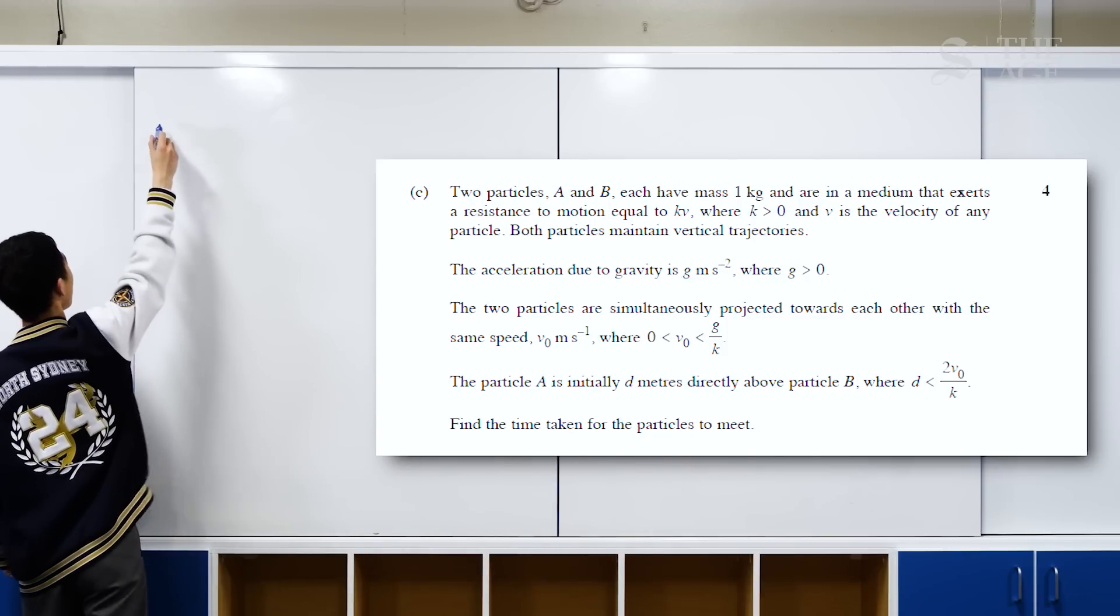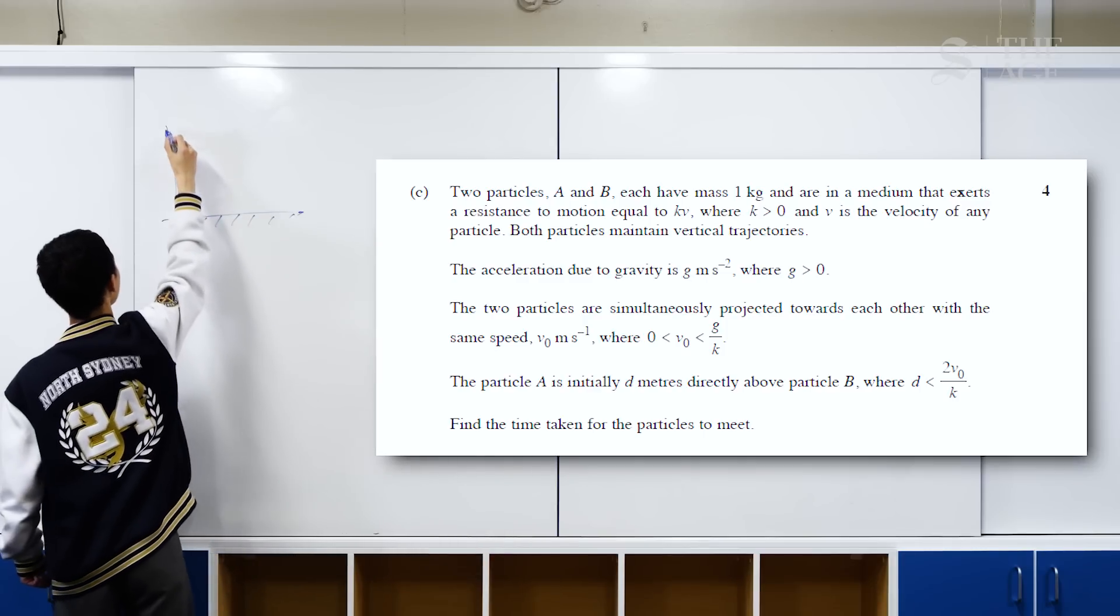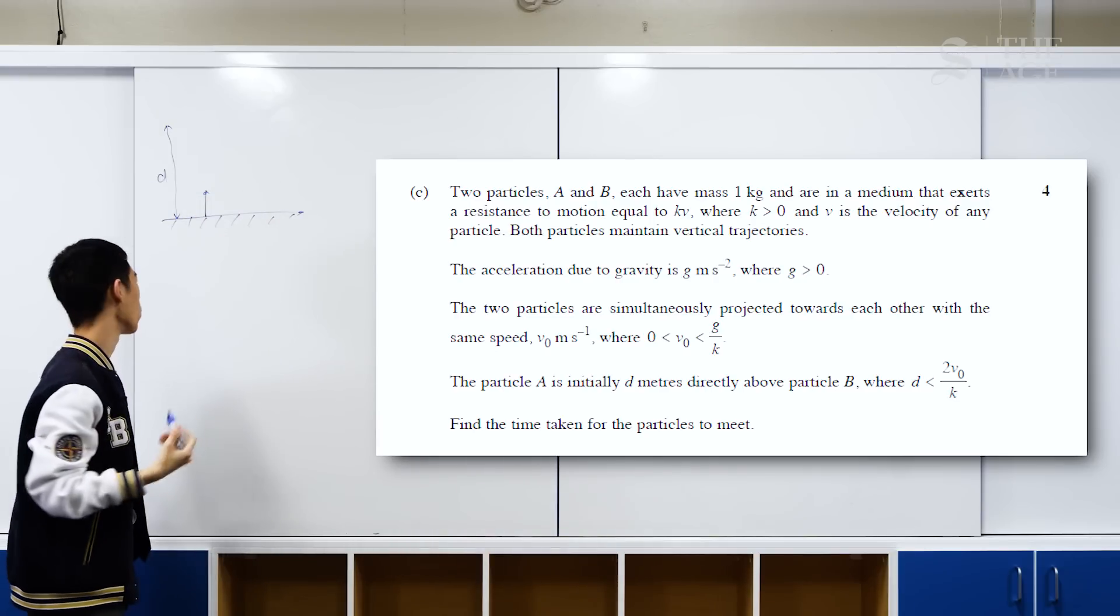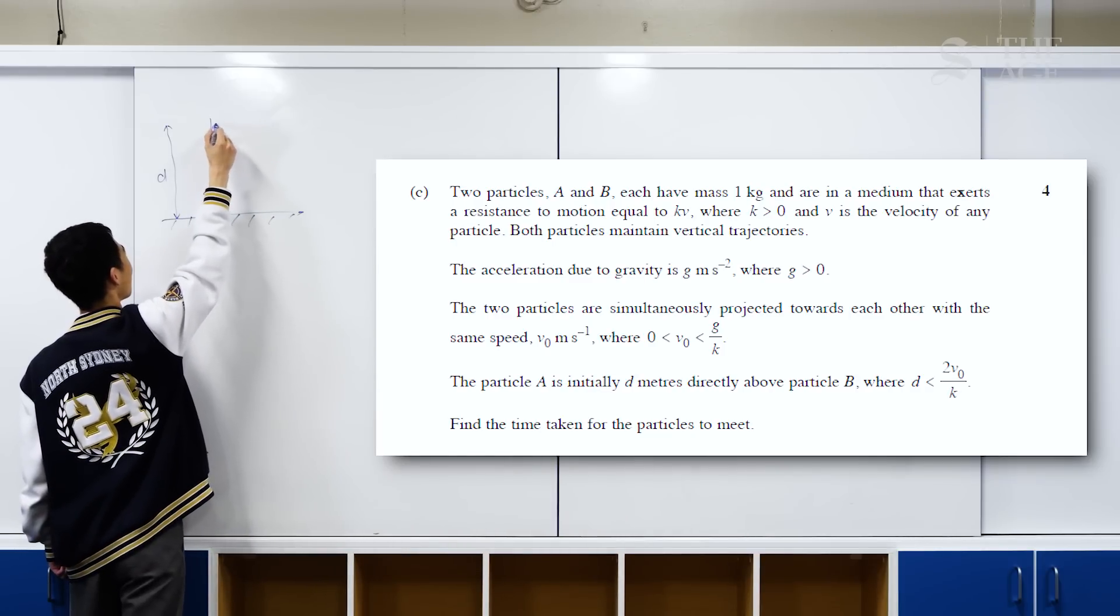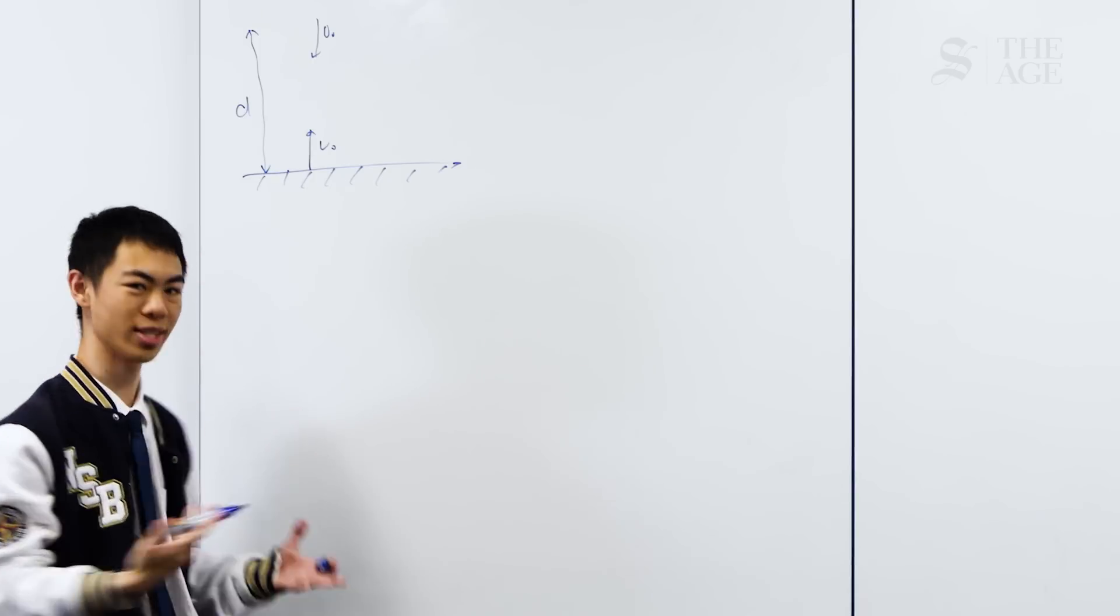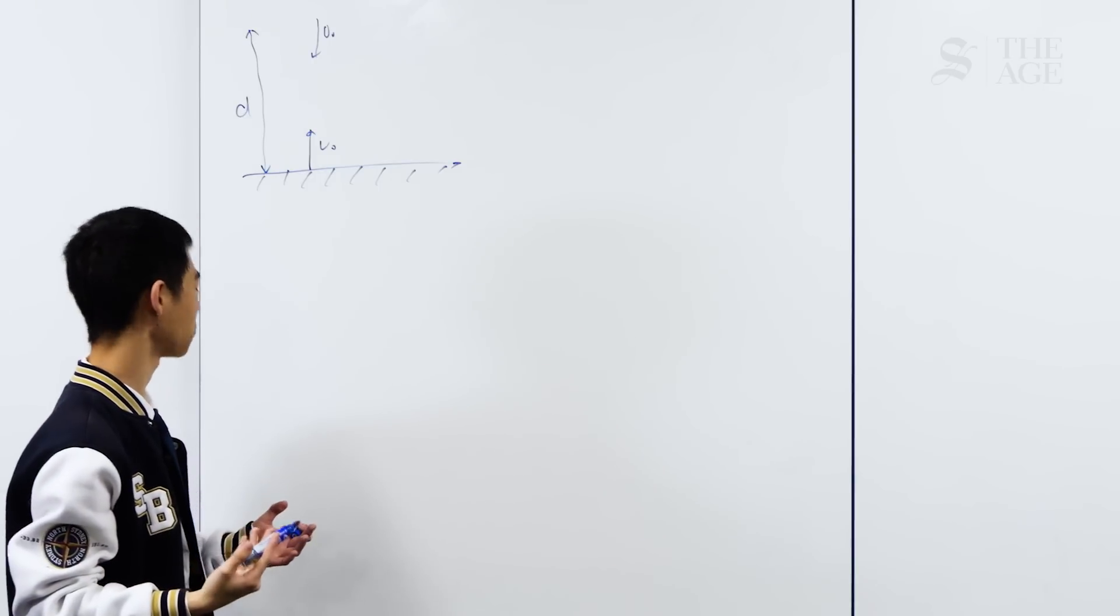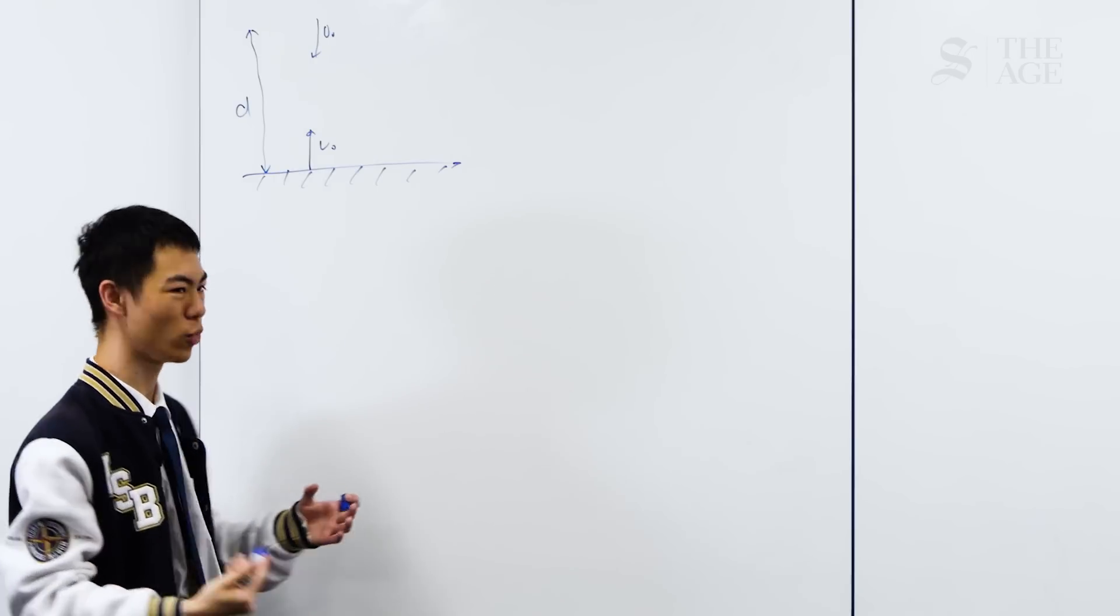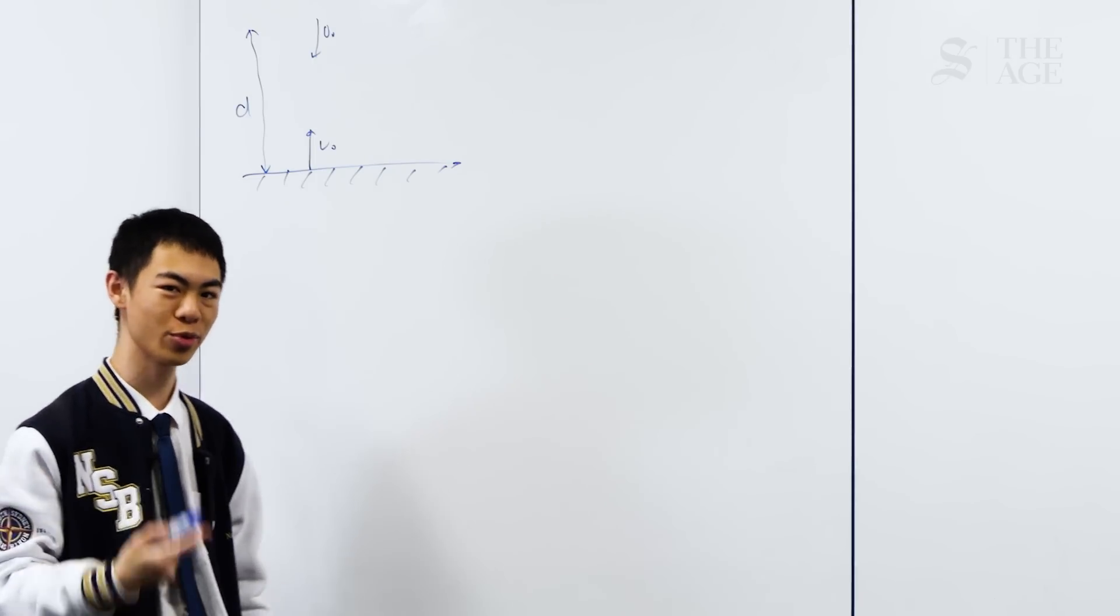Question 16c asks you to find where two projectiles will collide. Here we have the ground and we have some distance d. The first projectile moves up with an initial speed v0, and the second projectile is directly on top in the air going down, also with initial speed v0, but this time going down. This is a projectile motion question and it'll be asking us to do a lot of integrations or algebra. What made this question pretty challenging was the fact that we also had air resistance, which meant that both projectiles are being dragged by the air in different ways, which really complicates the calculations we have to do.